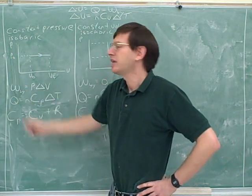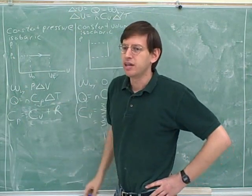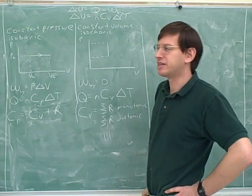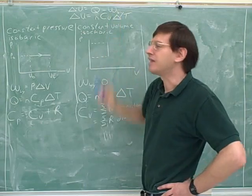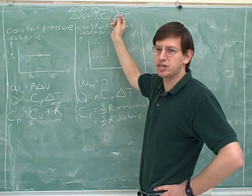Well now we can always find work or Q and then we can use those to find delta U. Now we have two ways that always work to find delta U. One way to find delta U is first to figure out the heat and the work. And the other way is just to focus on the change in temperature.